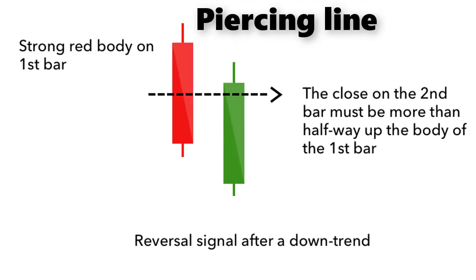Piercing line. The piercing line is also a two-stick pattern, made up of a long red candle followed by a long green candle. There is usually a significant gap down between the first candlestick's closing price and the green candlestick's opening. It indicates a strong buying pressure, as the price is pushed up to or above the mid-price of the previous day.